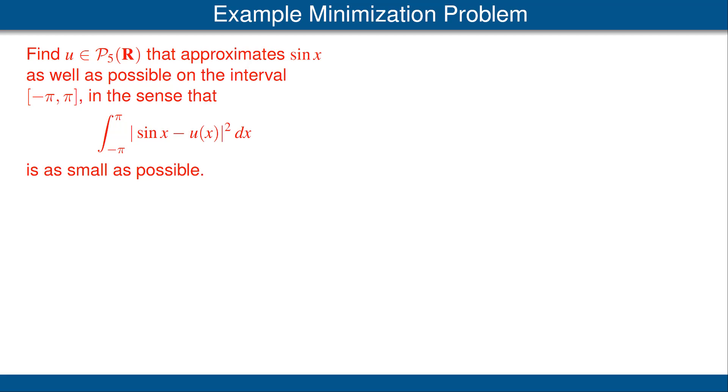Let's see where we are now with this problem. We wanted to find a function u that's a polynomial with real coefficients and degree at most 5 that approximates the sine function as well as possible on the interval from minus pi to pi,